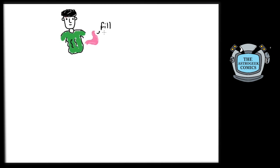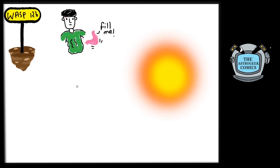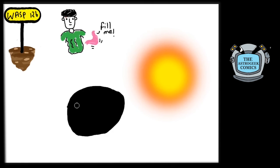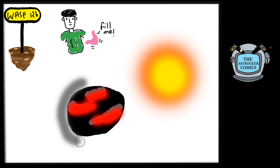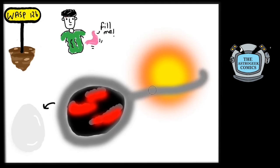All this talking has made me hungry. That reminds me of an exoplanet named WASP-12b, which is a gas giant so close to its star that the star's gravity has literally deformed it into an egg-shaped planet. The star is constantly eating up the material of the planet so fast that it is doomed to disappear in 100,000 to a million years, a time too short in the astronomical scale.